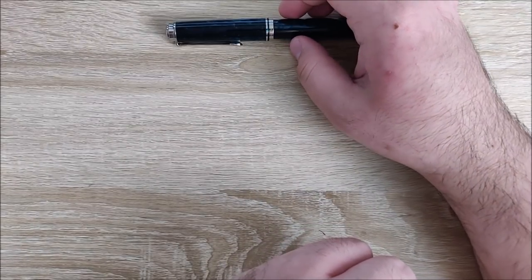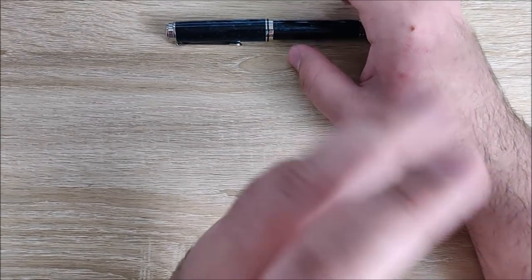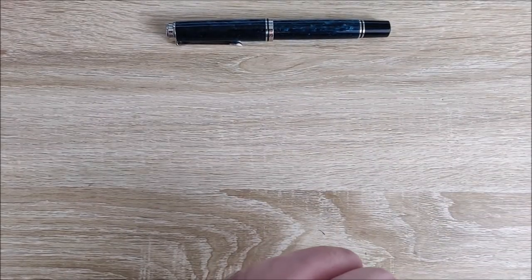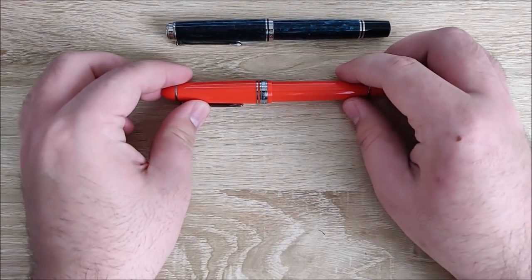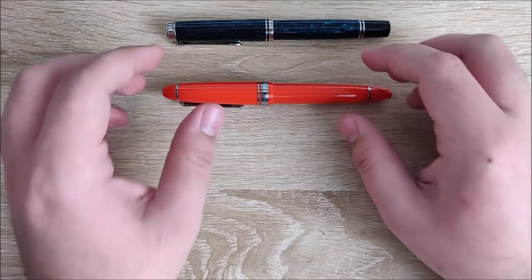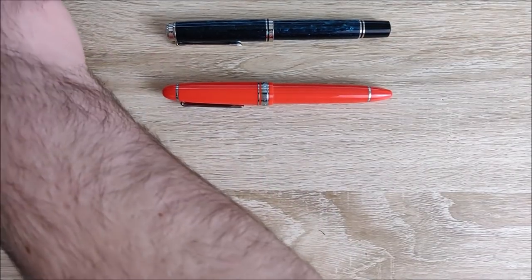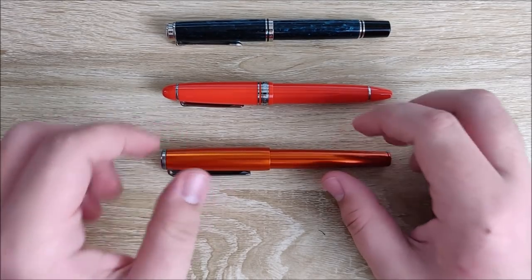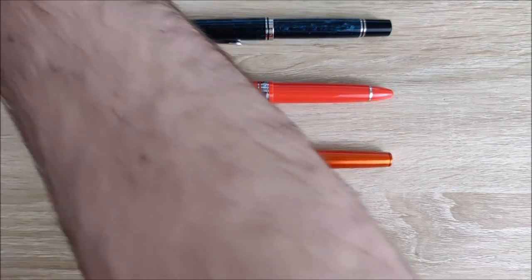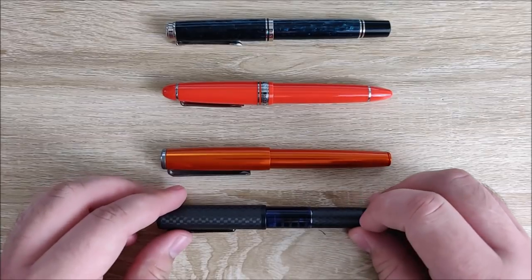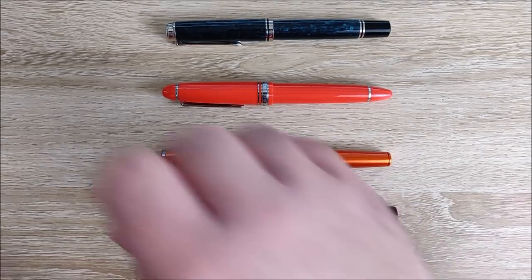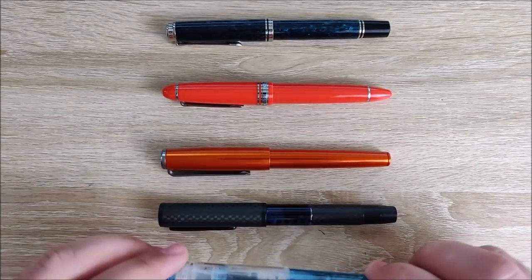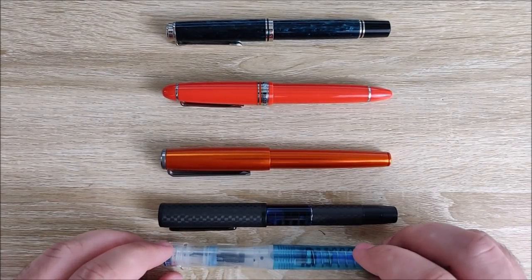All right, so let's go ahead and bring them all up here. At the number one spot, again, we have the Pelican M805 Ocean Swirl. At the number two spot, we have the Sailor 1911 Large Royal Tangerine. The number three spot goes to the Keras Customs Decagraph Monsoon. Number four is the Conklin Word Gauge, and number five is going to be the Twisbi Go.